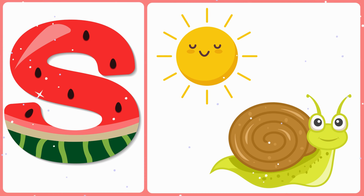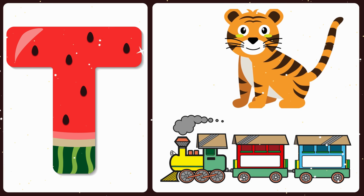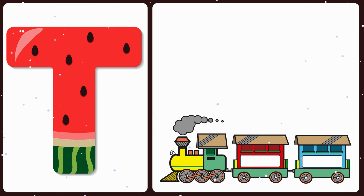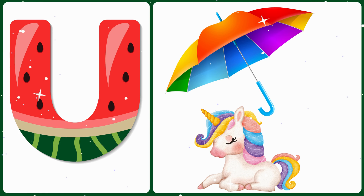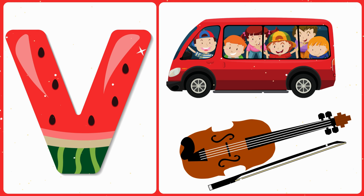T — T is for tiger, T is for train. U — U is for unicorn.